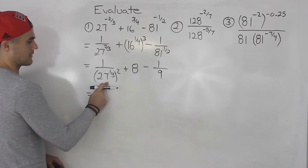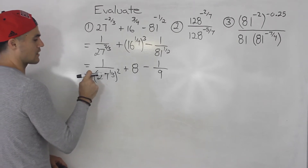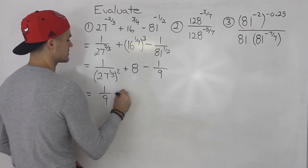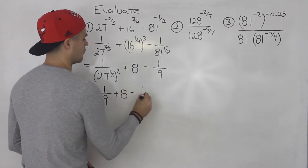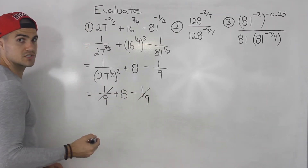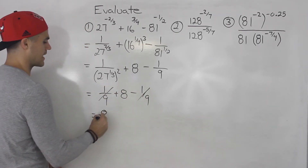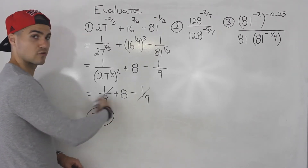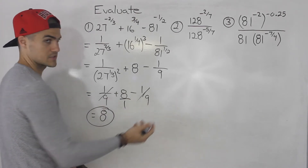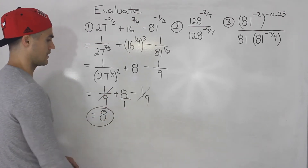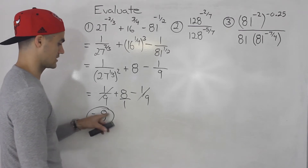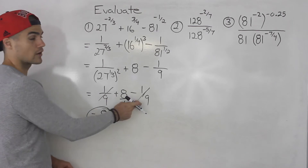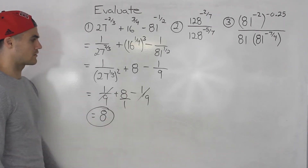27 to the power of 1 over 3 ends up being 3, and then 3 squared is 9. So this would end up being 1 over 9 plus 8 minus 1 over 9. Notice the 1 over 9 will just cancel out, and you end up getting 8 as the final answer. Now if these didn't cancel out, these would be fractions you're adding — this 8 would be over 1, you'd have to get a common denominator and add or subtract the fractions. But this example is nice because the 1 over 9 nets out to 0, and we're left with 8.